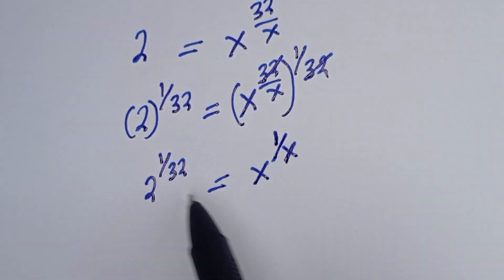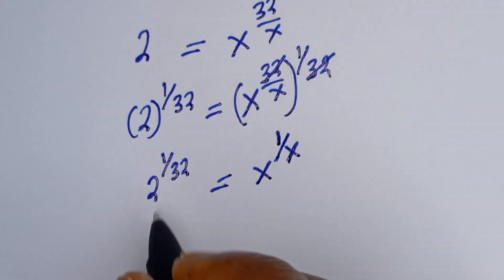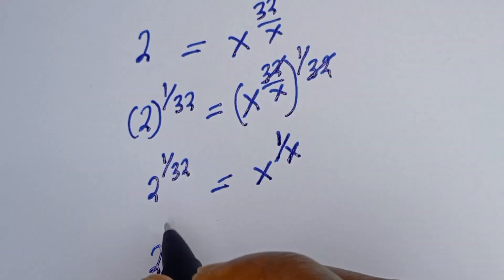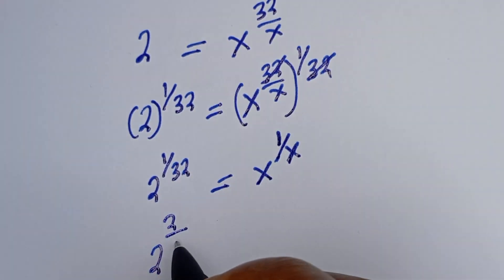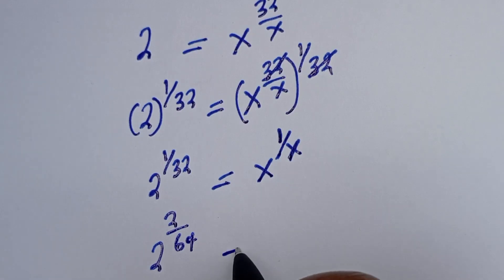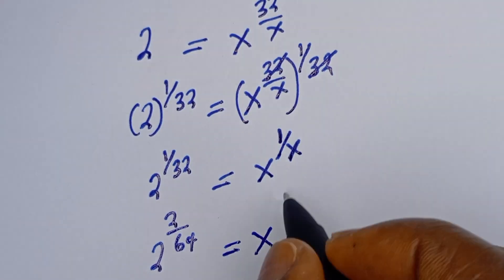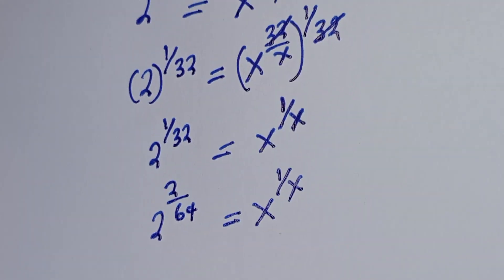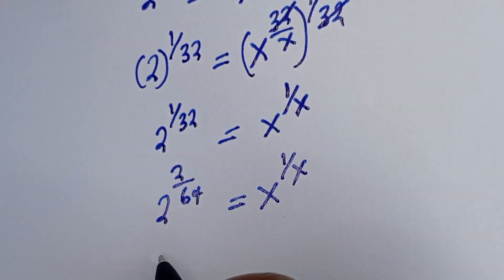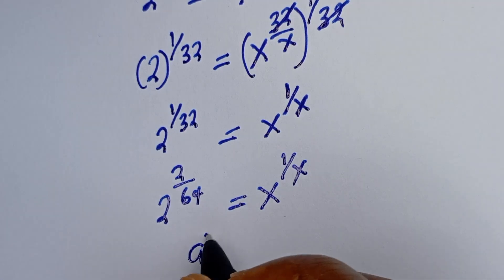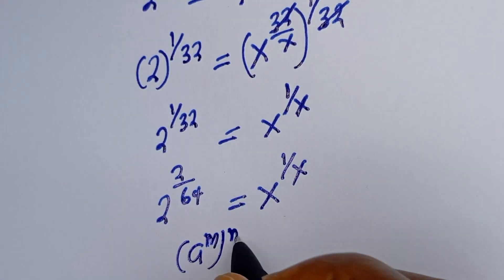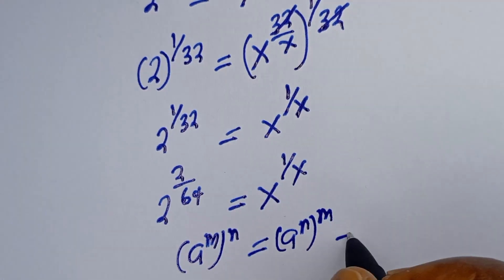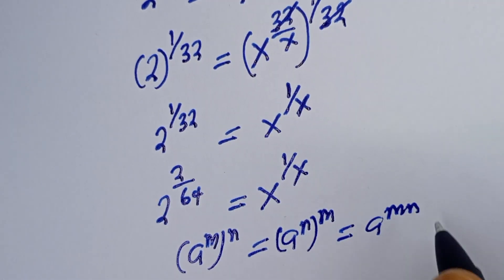But we want to find the value of s, and the left and right sides are not yet equal. Note that 2 to the power of 1 over 32 can be rewritten. Also take note of this rule: if you have m to the power of n equal to n to the power of m, this is equal to a solution for m and n.